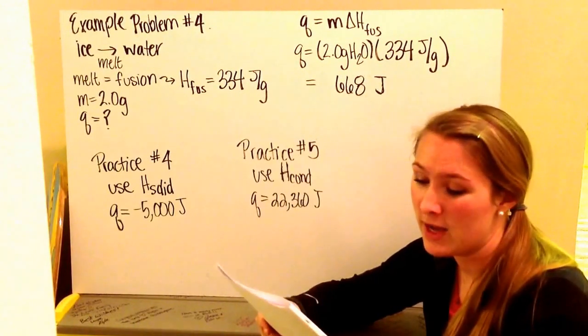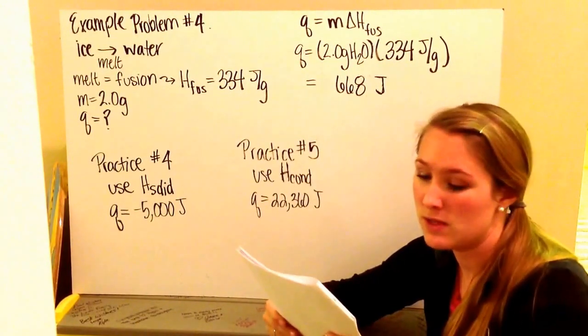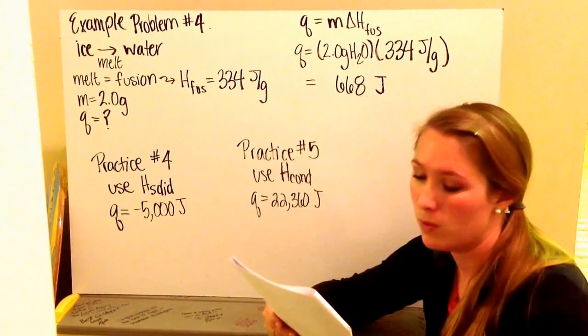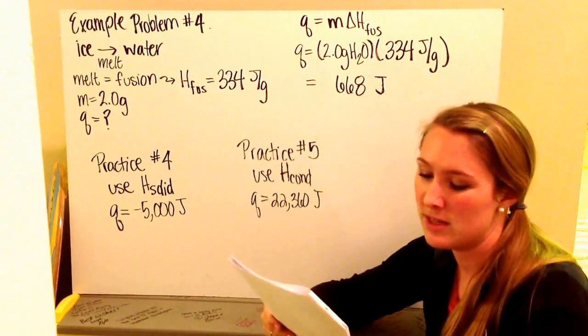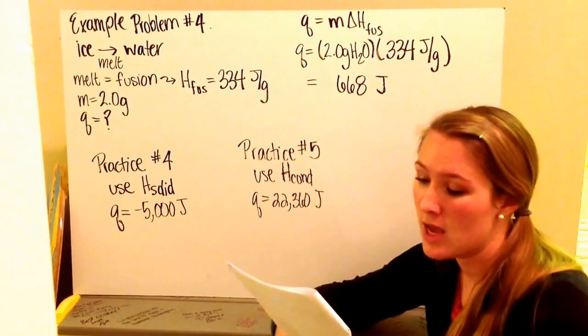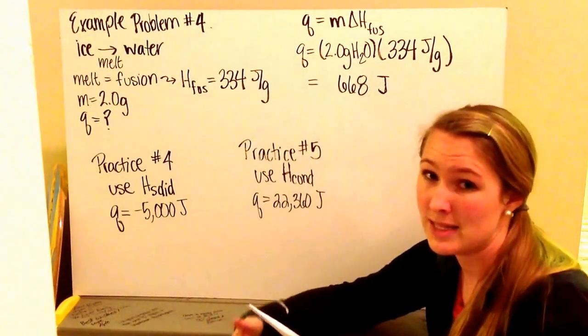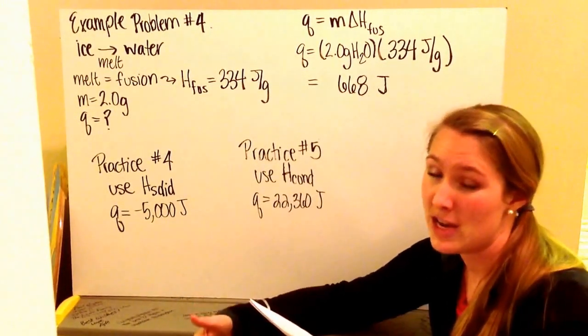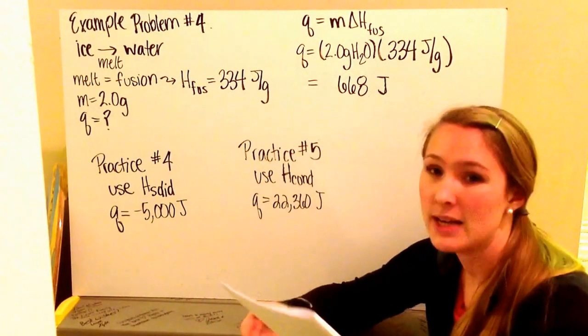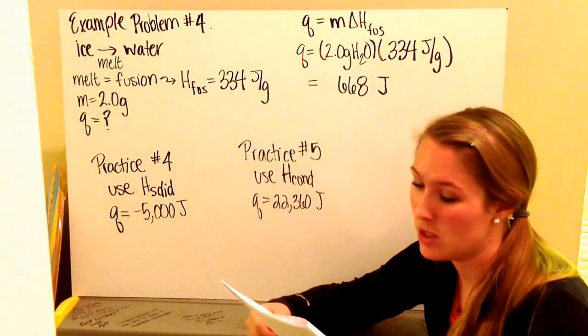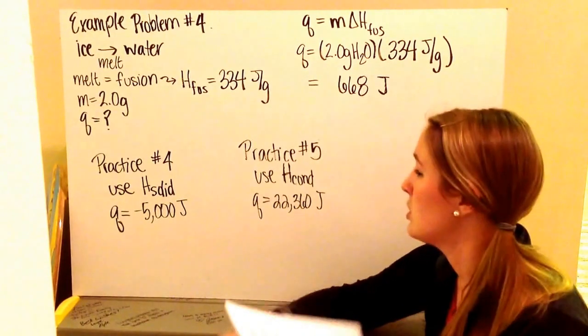Practice problem number 5 says that if 10 grams of steam condense into liquid water, how much energy must have been released. I'm going from steam to liquid, so it's condensing, so it tells me what my H is, my heat of phase change. And I solve again for my heat, which is Q, or how much energy, which is Q.